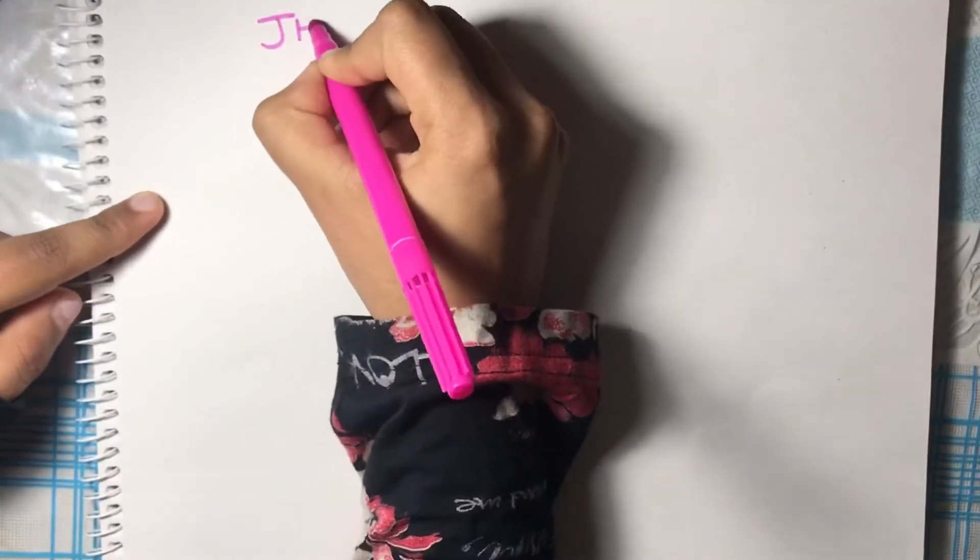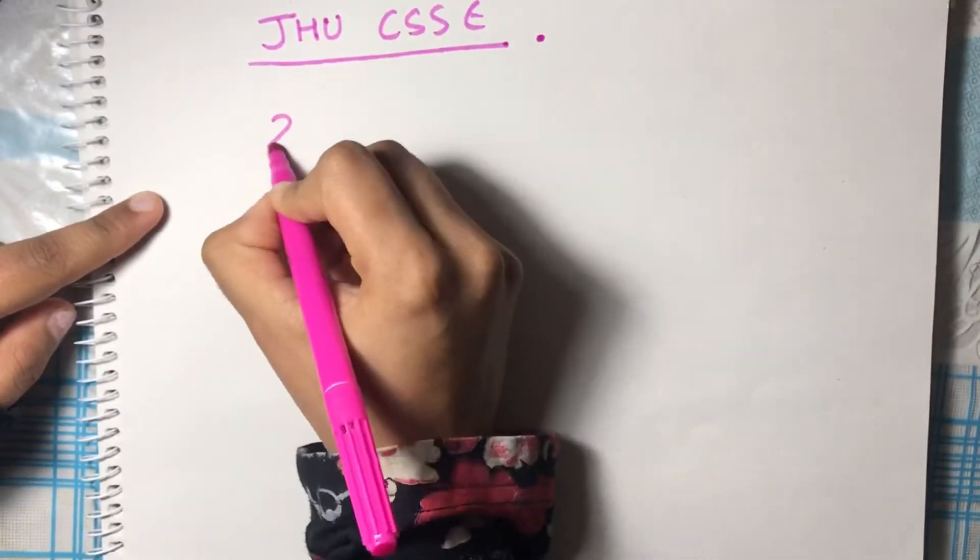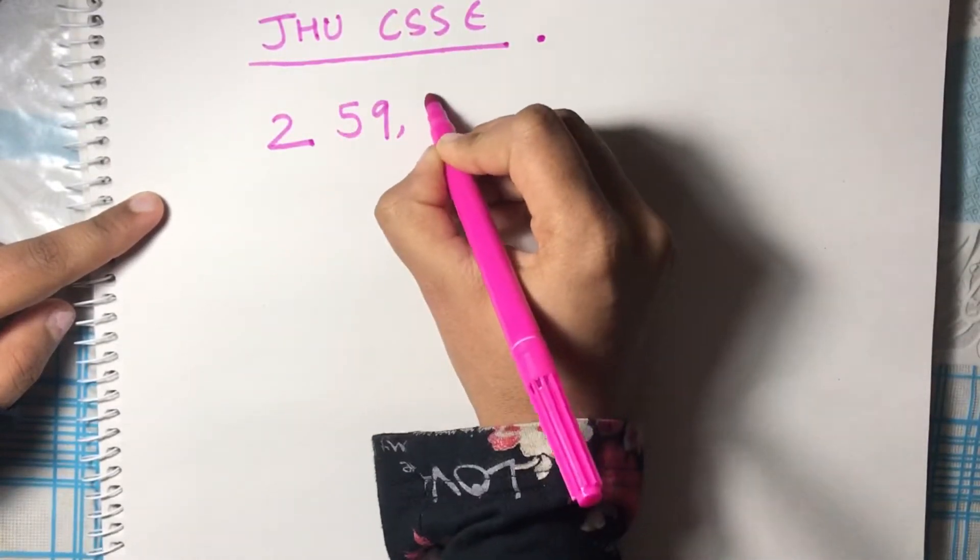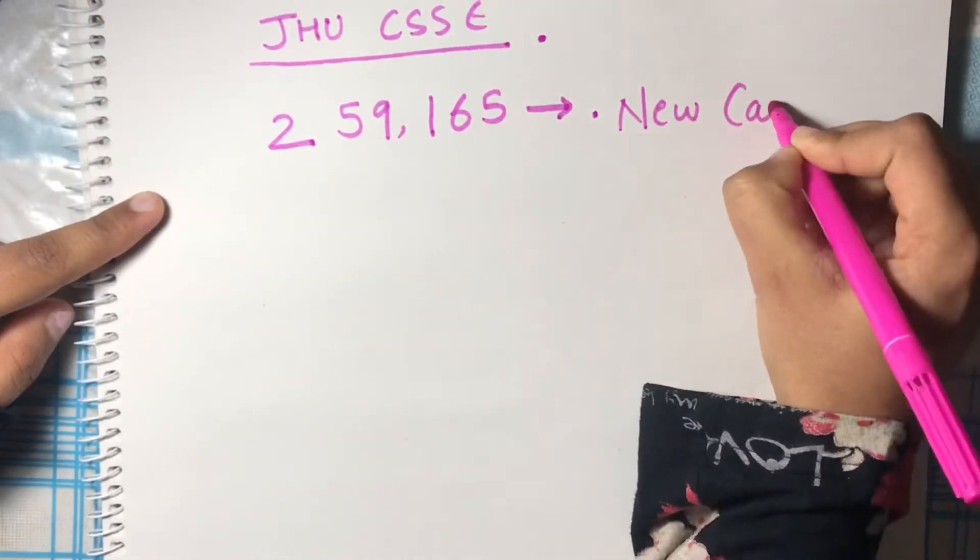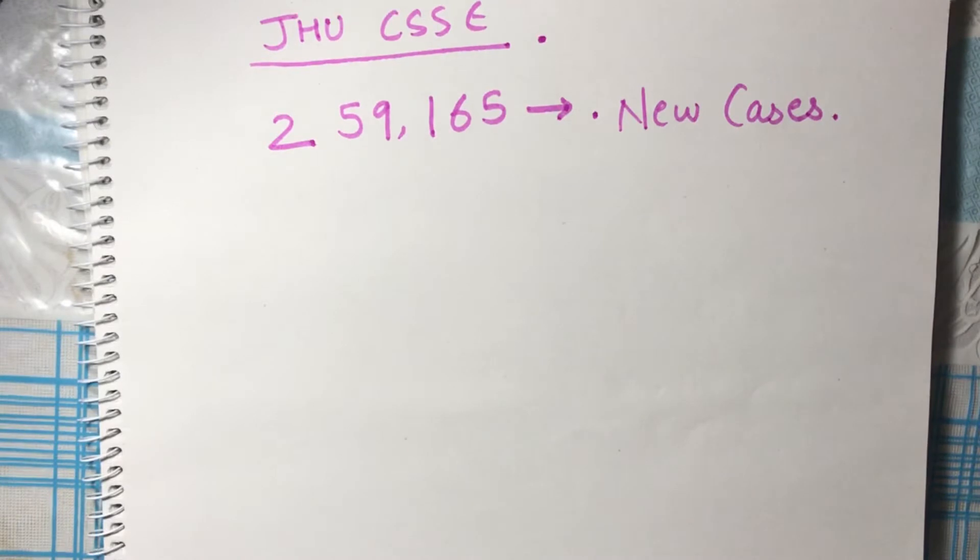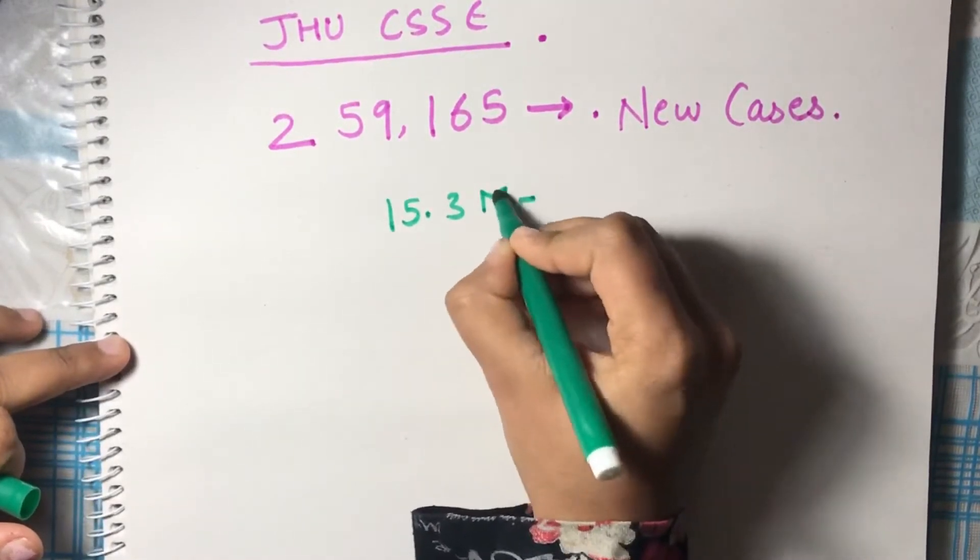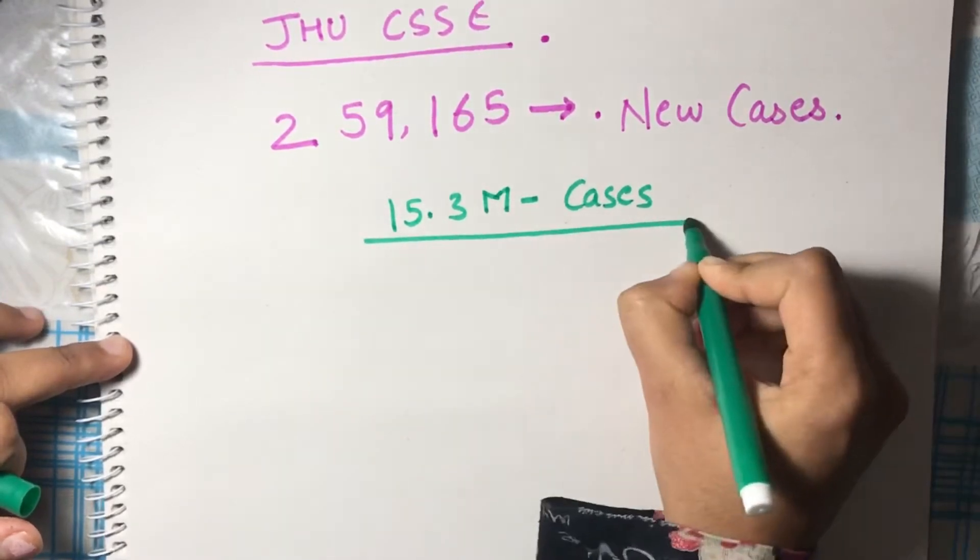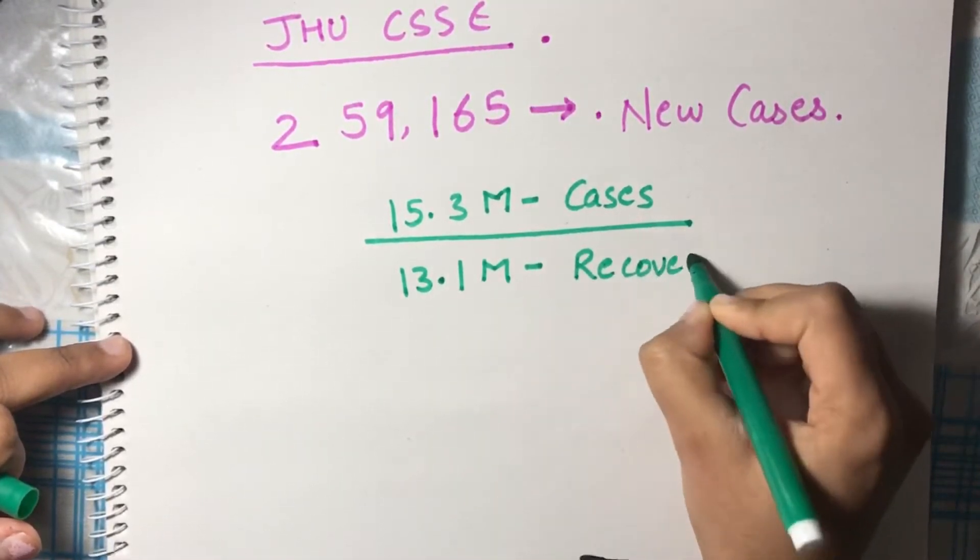According to the current data provided by JHU CSSE on COVID-19, there are 259,165 new cases recorded on Tuesday in India on a single day. If we talk about the total cases on record, there are 15.3 million cases total and 13.1 million cases which are recovered.